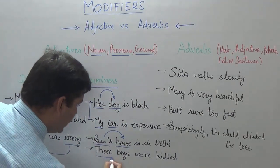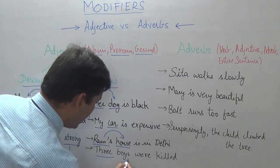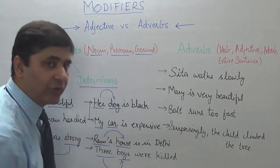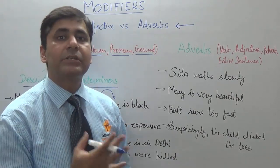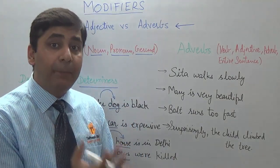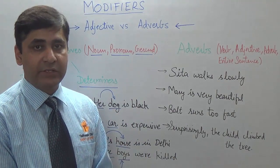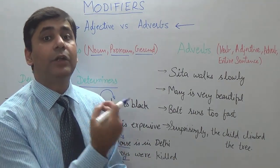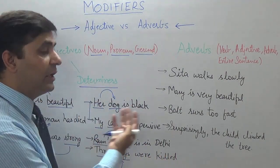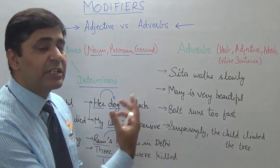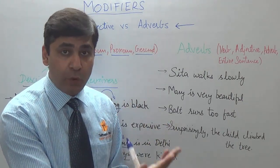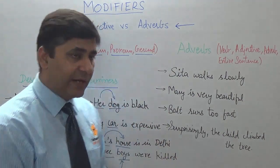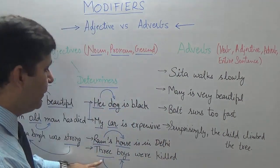Here you see 'three boys.' The noun 'boys' is modified by 'three' because we get to know about the number — the quantity — of boys. This word could be 'three boys,' 'some boys,' 'many boys,' 'few boys,' 'no boys' — whatever. That will be the quantity determiner.